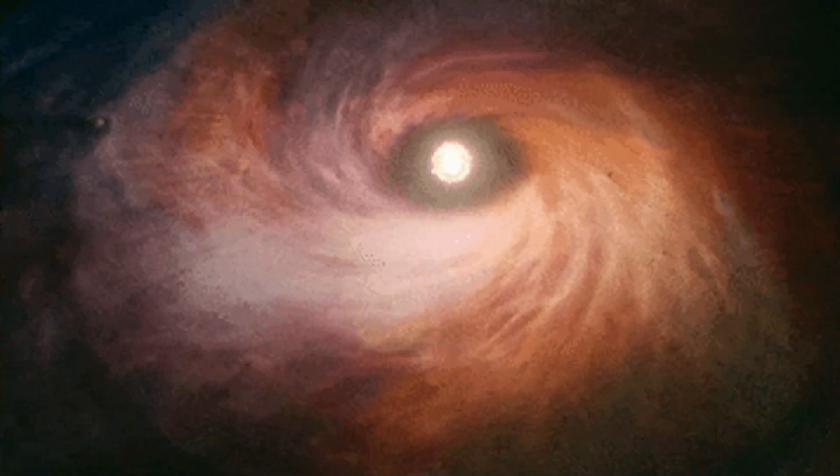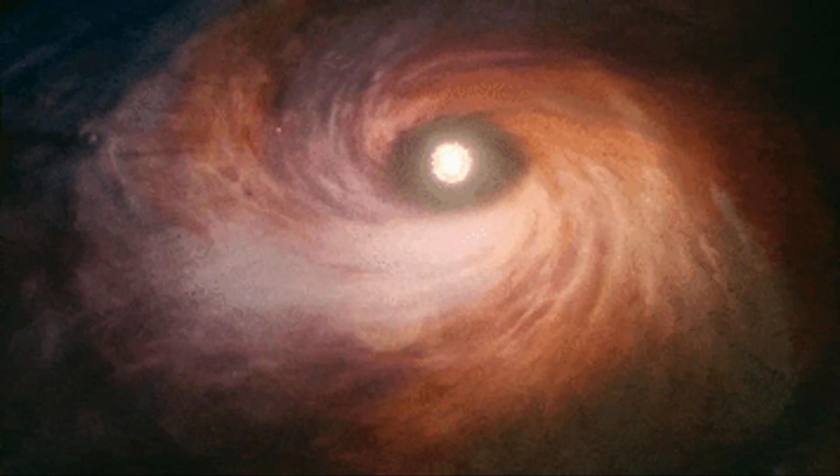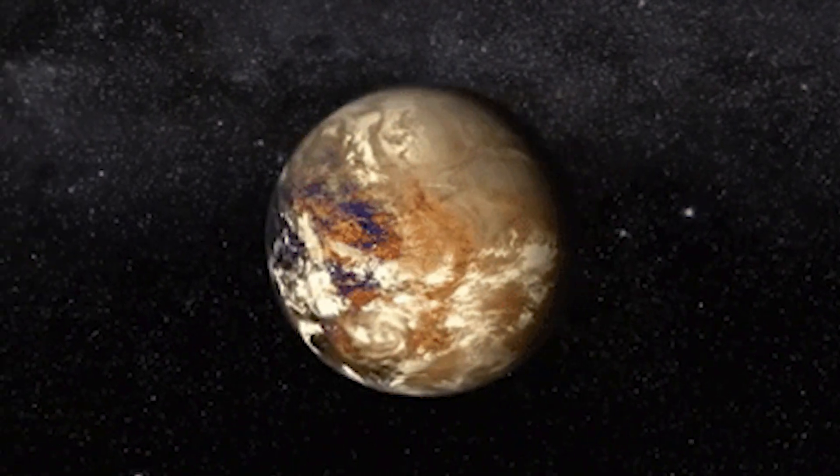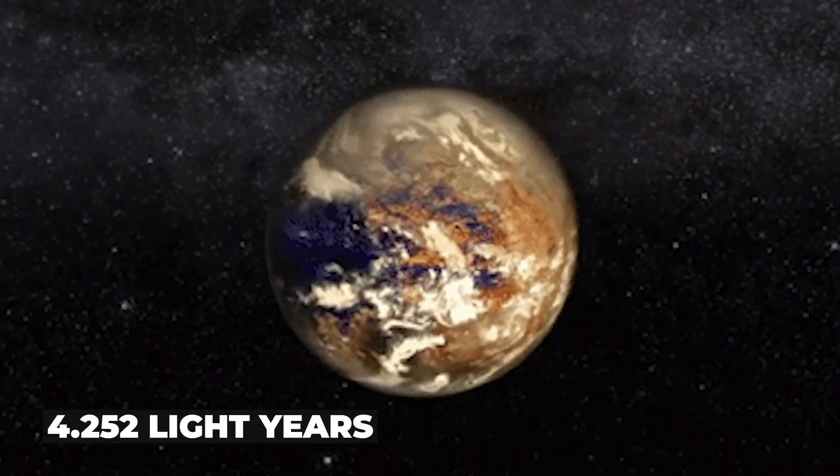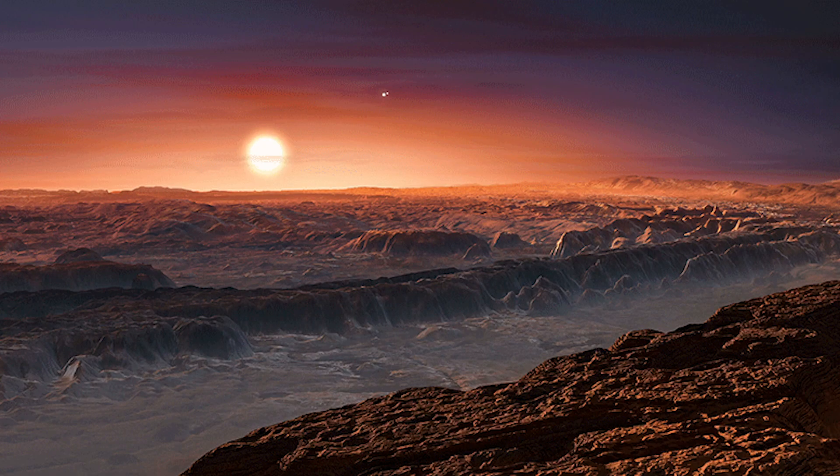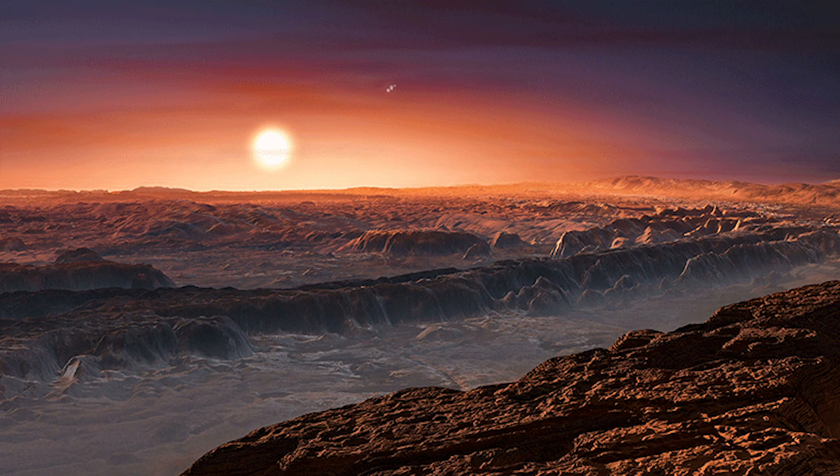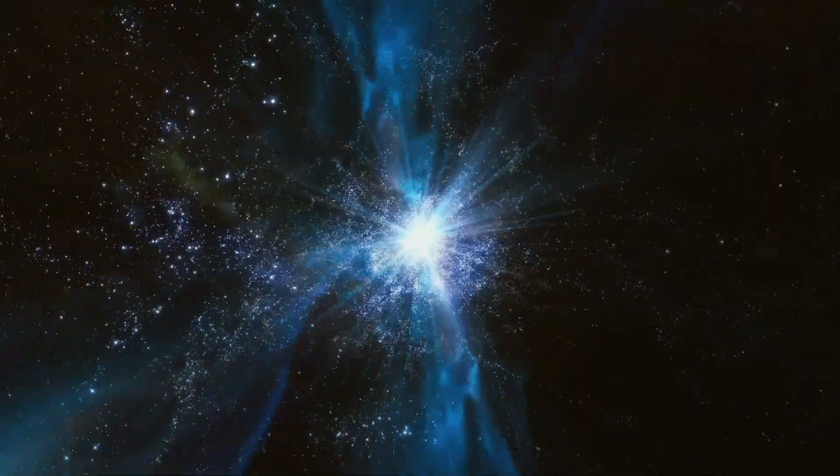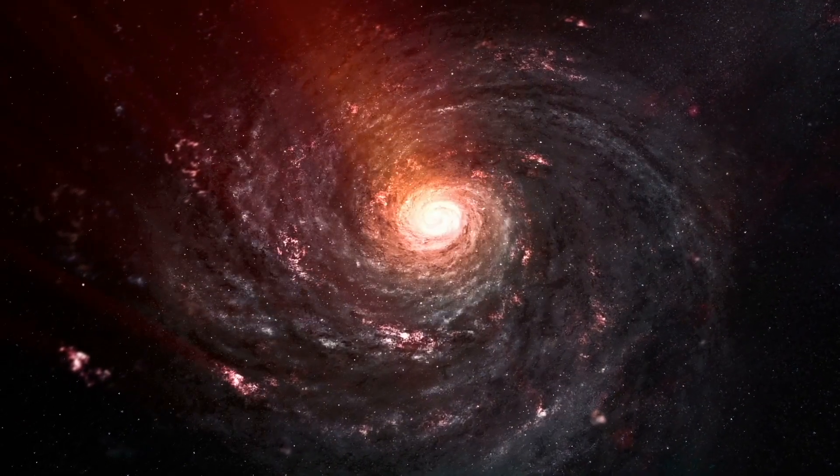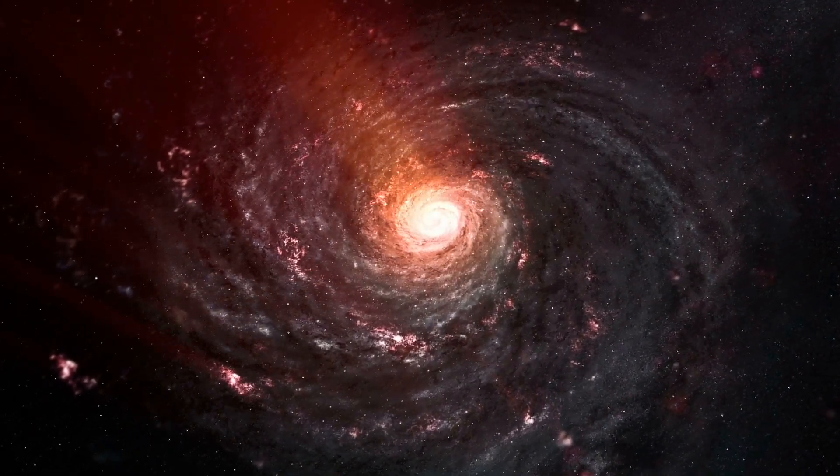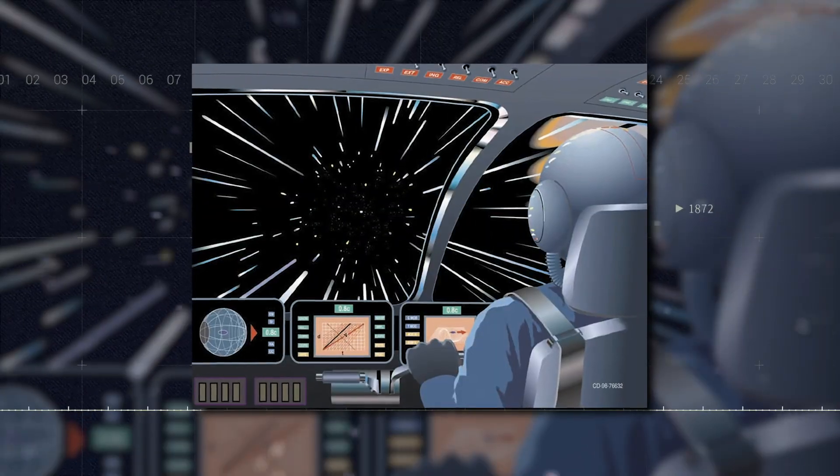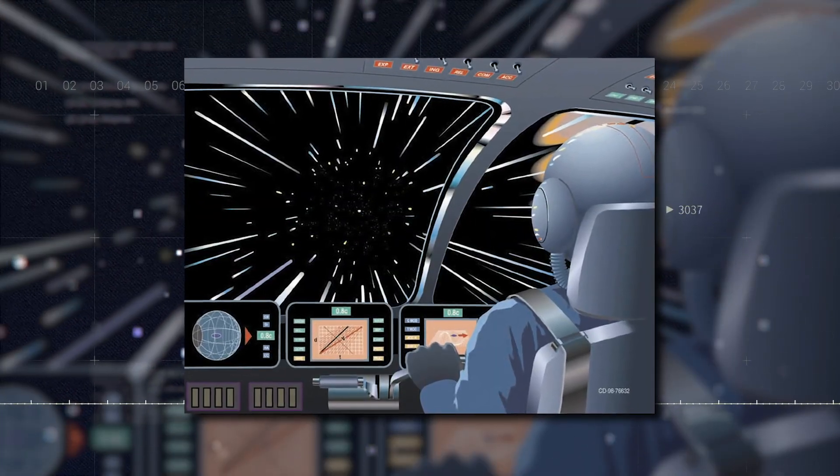For instance, Proxima Centauri, the closest star to us apart from the Sun, is 40 trillion kilometers, or 4.252 light-years away. That means that it will take us around 4 years and 2 months to reach this star if we're traveling at the speed of light. So, it's clear that if we want to travel to other stars and galaxies or explore the universe, we need a means of transportation faster than the speed of light.